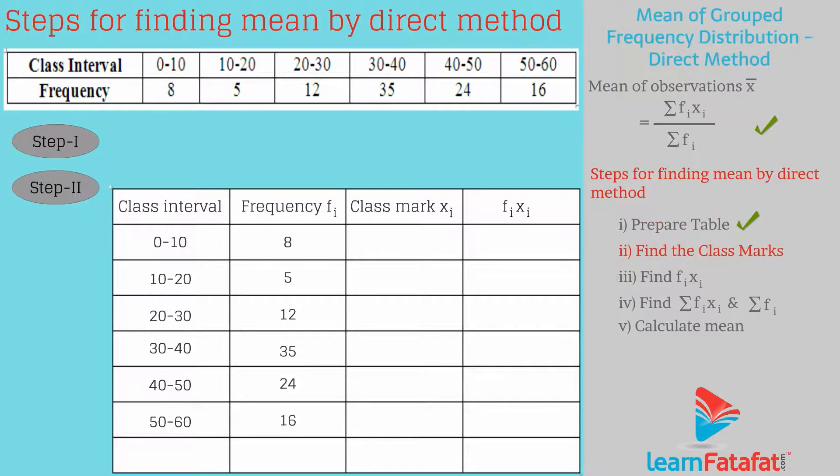Step 2: Find class mark for each class interval. The class mark for class interval 0 to 10 is 0 plus 10 divided by 2, which is equal to 5. Similarly, other class marks are 15, 25, 35, 45, 55.